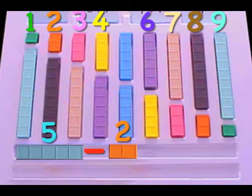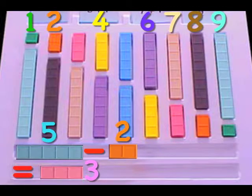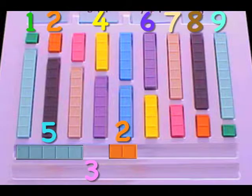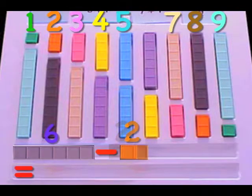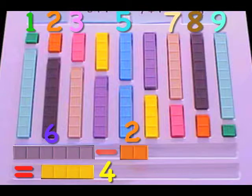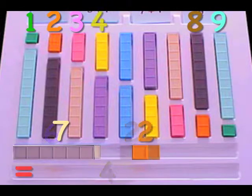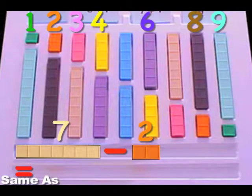Five minus two equals three. Six minus two equals four. Seven minus two equals five.